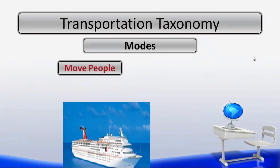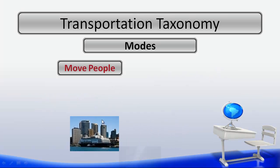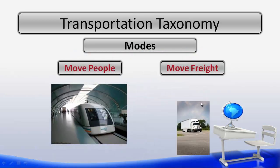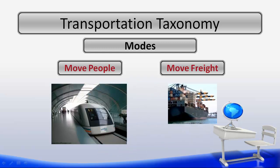Next in our transportation taxonomy, we have our two modes. Our first mode is to move people. Here we see examples of how we might move people on land and water. And then our next mode is to move freight. Here's an example of land transportation and then water transportation for moving freight.